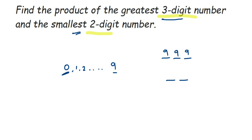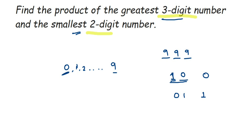Now let's find the smallest two-digit number. Zero is the smallest digit, but if both digits are zero, the value becomes zero, which is a single-digit number. So I replace the first digit with one, because one is the next smallest digit after zero. That gives us ten, and ten is the smallest two-digit number.